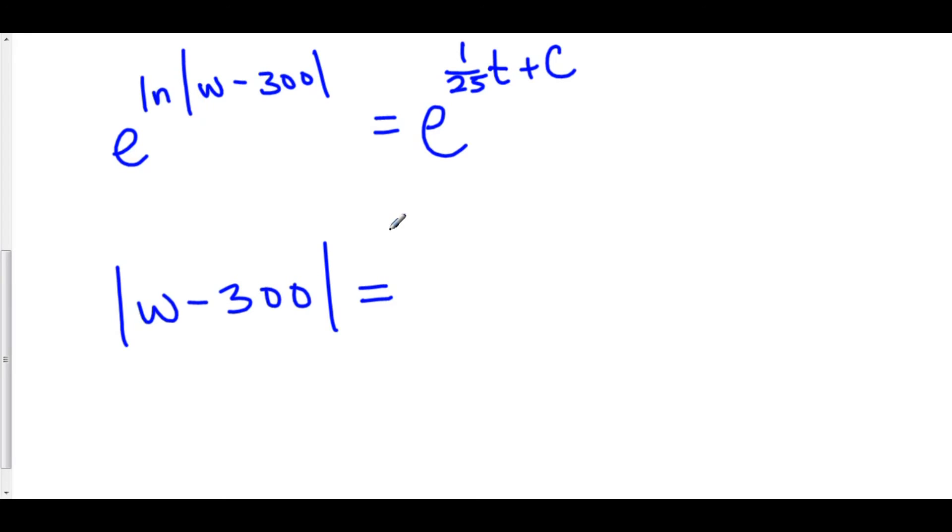On the right hand side, we can do a really cool trick. Anytime you have a c in the exponent, you can use one of your properties of exponents to get it out of there. The property we're going to use is, if you add in the exponent, you can break apart the base. This is e^(1/25t) times e^c. In algebra, you'll learn that if you multiply a common base, you add the exponents. You can go backwards as well.